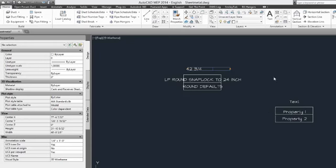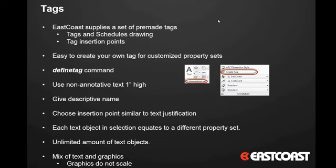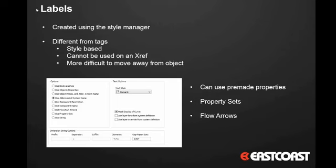Going back to the slide, we've covered everything on the tags section. Now let's get into labels. Labels are a little different from tags — tags are created using text and multi-view blocks with the define tag command, whereas a label is created using the Style Manager. Labels are style-based, and importantly you cannot use a label through an xref. With tags, you can certainly xref a duct drawing into your current drawing and tag all that duct in the xref. Labels are unable to do that.